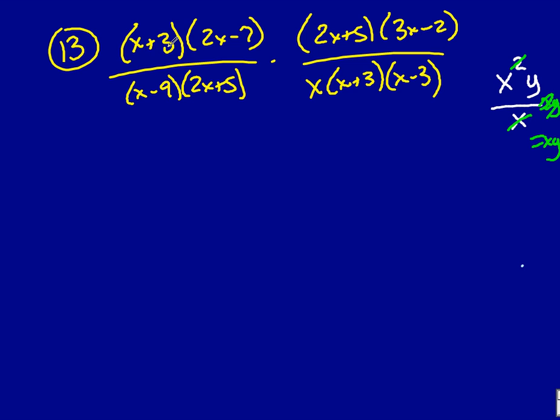So what I should say is, I have an x plus 3, does that show up as a factor on the bottom as well? And in fact, it does. That means I can cancel both of those out.